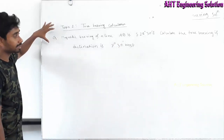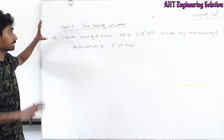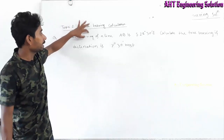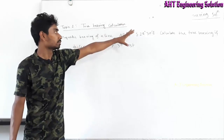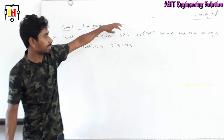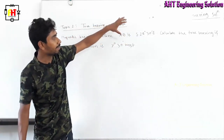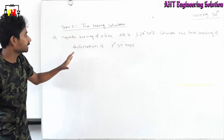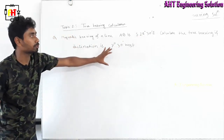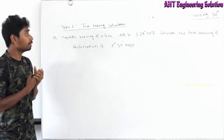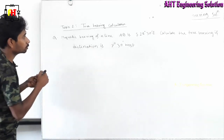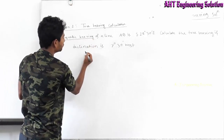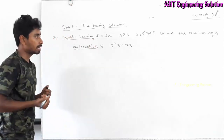First, let's take a look at the course problem. The magnetic bearing of the line A-B is given. That means line A-B has a magnetic bearing of a certain degree. We need to calculate the true bearing if the declination is equal to a given degree. The key given values are: magnetic bearing and declination.